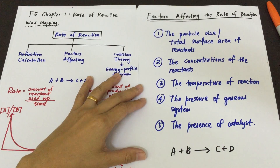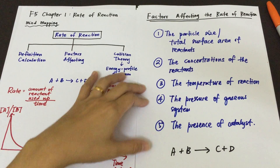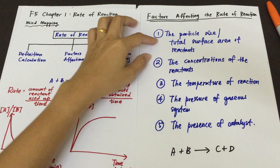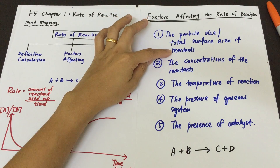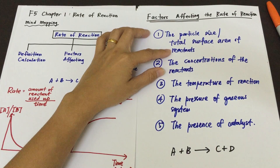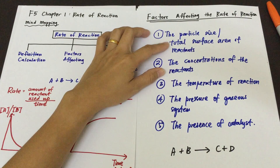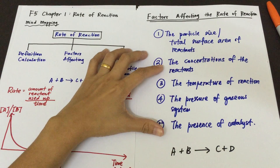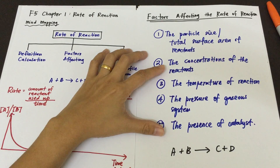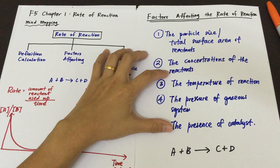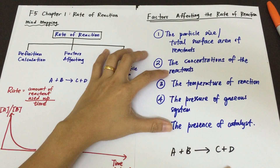When talking about the factors affecting the rate of reaction, you will see that different factors always relate to the reactants. For example, the particle size of the reactants — that means for reactants A and B, whether they are in a large size or a smaller size — the total surface area of the reactants. We never mention about the products. For concentration, it is also the same: we have to mention clearly that it is the concentration of the reactants, because the reactants are the ones that react and form the products.